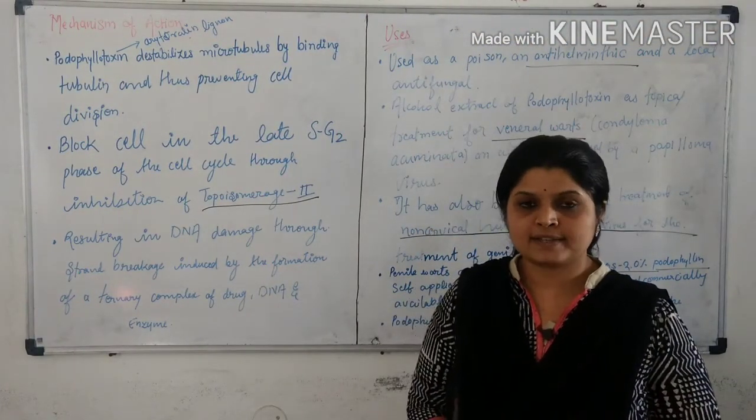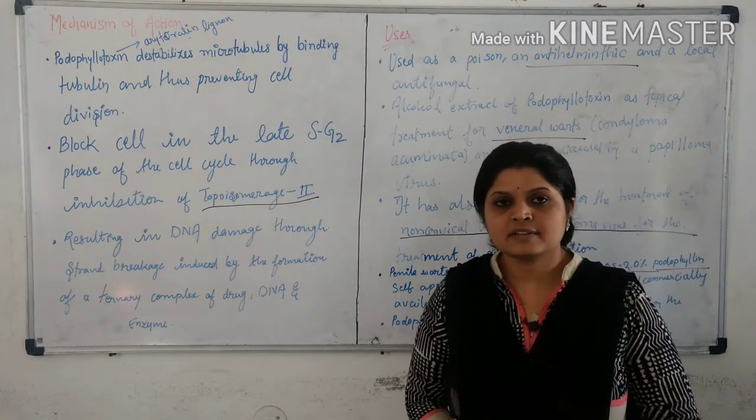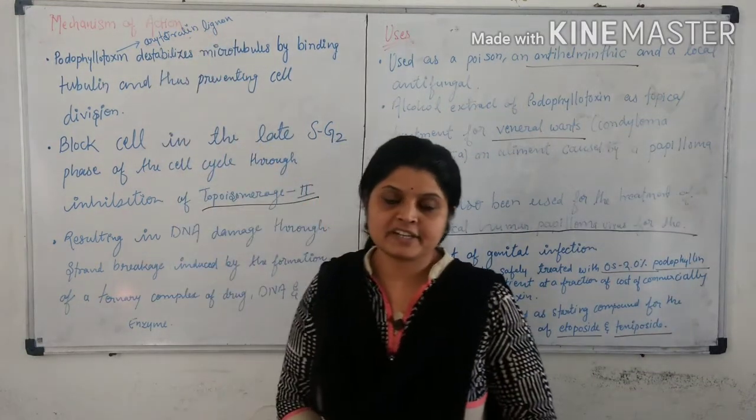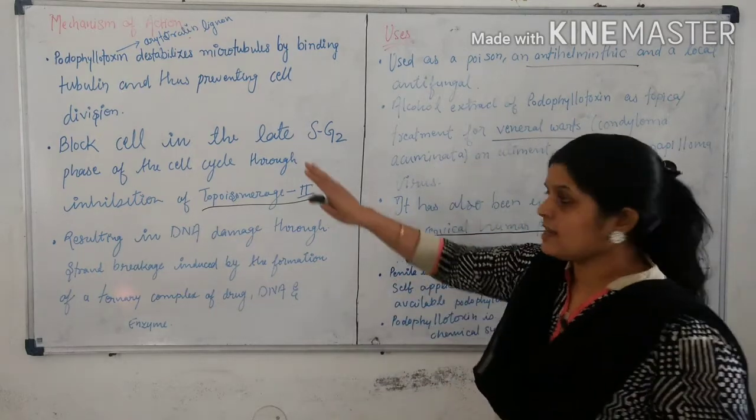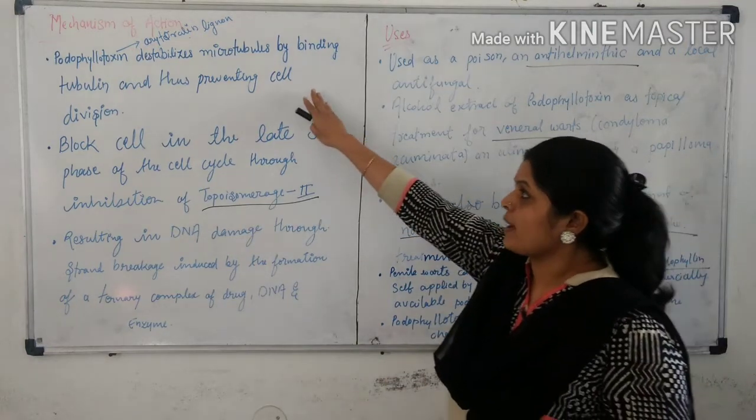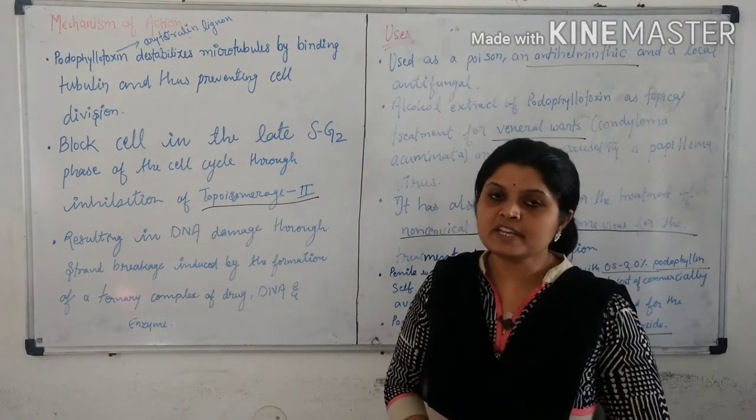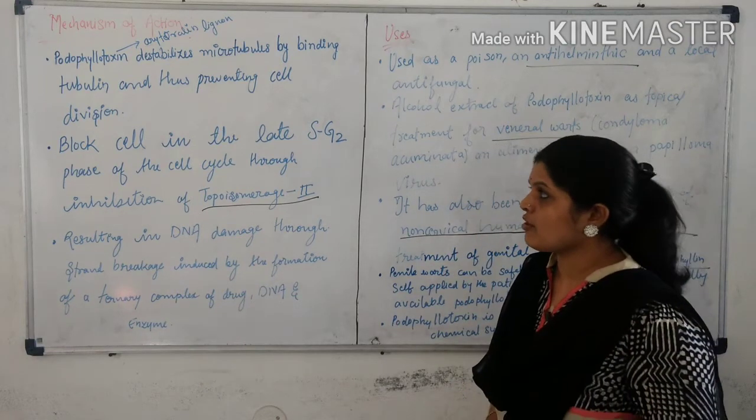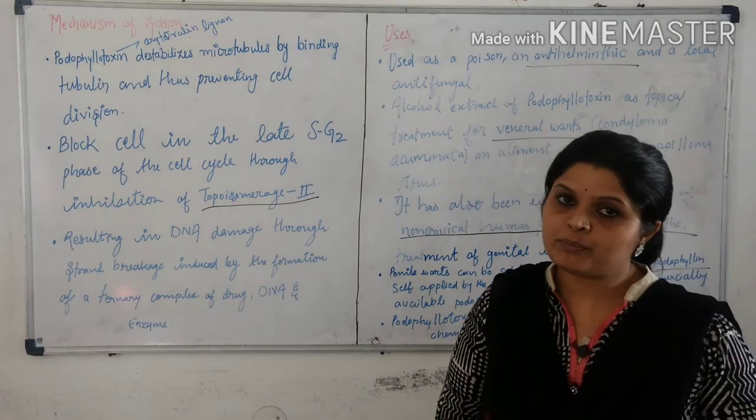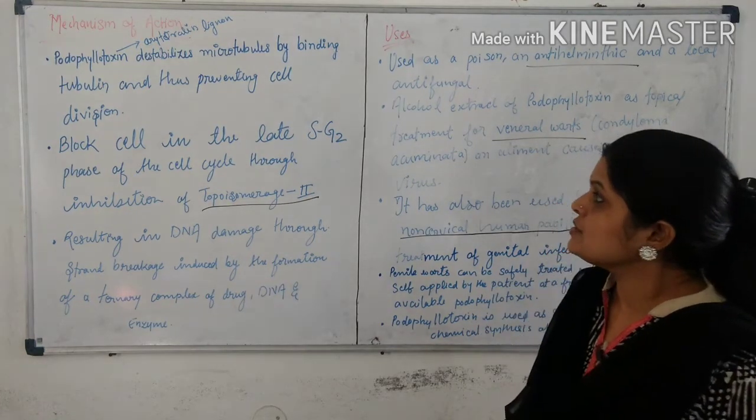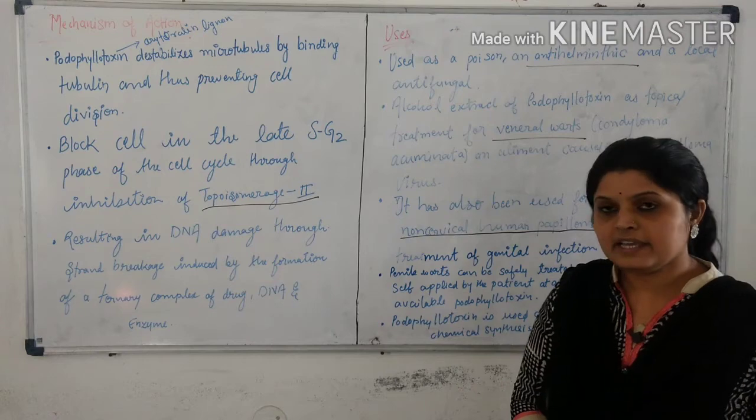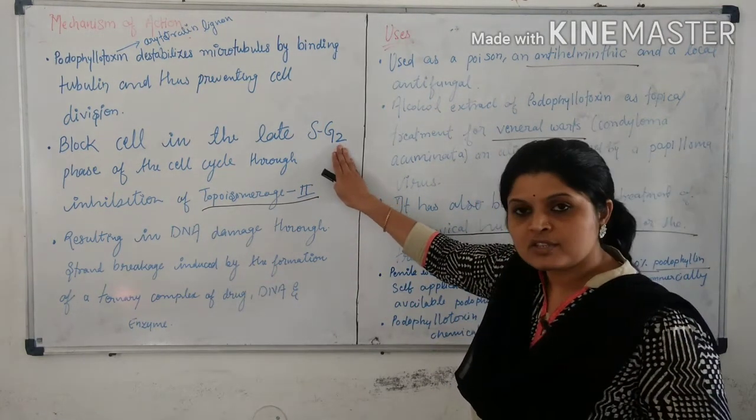Mechanism of action of podophyllotoxin: Podophyllotoxin is classified as an antimitotic ligand and it binds to tubulin protein and deactivates DNA. So podophyllotoxin destabilizes microtubules by binding tubulin protein and disrupting the cell mitosis.